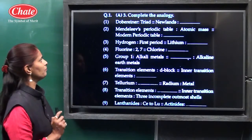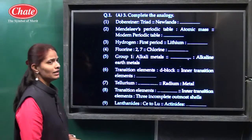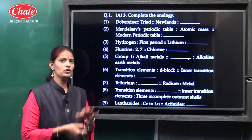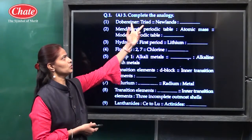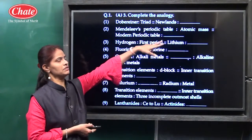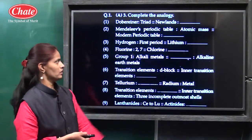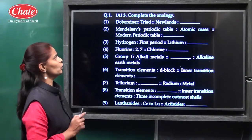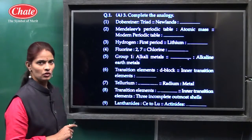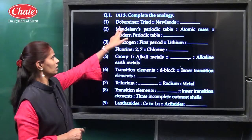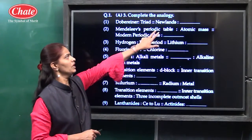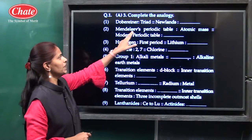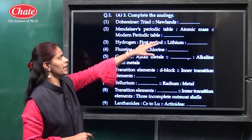Then: boron, silicon, polonium, neon — neon is the answer because the others are metalloids. Lithium, magnesium, sodium, potassium — lithium, sodium, and potassium are first group elements with valency one, so magnesium is the answer as it belongs to the second group. Chlorine, bromine, arsenic, fluorine — chlorine, bromine, and fluorine are the halogen family and arsenic is a metalloid, so arsenic is the answer. Here the next question is: complete the analogy.